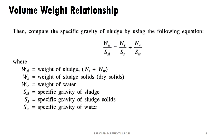Let's take a look at the specific gravity of sludge. The equation is: W_SL divided by S_SL equals W_S divided by S_SS plus W_W divided by S_W. Here, W_SL is the weight of sludge, equal to W_S plus W_W. S denotes sludge solids or dry solids, W denotes water. W_S is weight of sludge solids or dry solids; W_W is weight of water. S_SL is specific gravity of sludge, S_SS is specific gravity of sludge solids, and S_W is specific gravity of water.